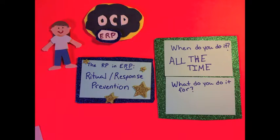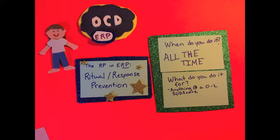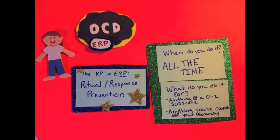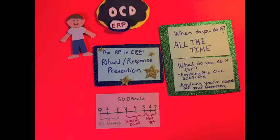Now, I know that may sound really daunting, but we're not going to ask you to do it for everything all at once. So what do you do ritual prevention for? You do ritual prevention for anything that is at a 0 to 2 SUD score, or for compulsions related to any task that you've crossed off your hierarchy. So there's a quick picture of our SUD scale. You're going to do ritual prevention for anything that is in that green, do always category.